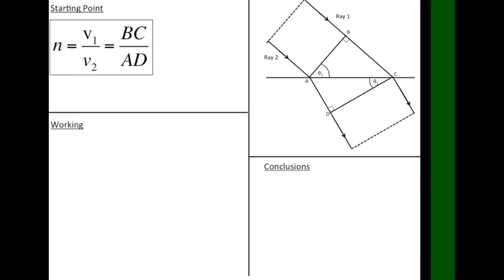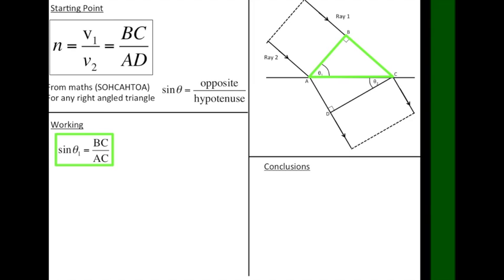We need to use the conclusion from the last slide, plus some trigonometry for our maths. For any right angle triangle, the sine of the angle is always equal to the length of the opposite side, divided by the length of the hypotenuse. For the triangle in air, marked green, that gives sin theta 1 is equal to BC over AC. And for the triangle in glass, red, that gives sin theta 2 is equal to AD over AC.